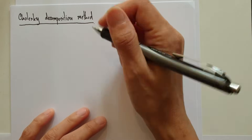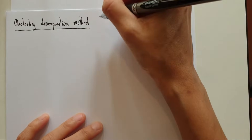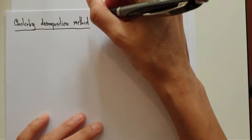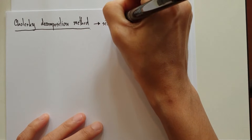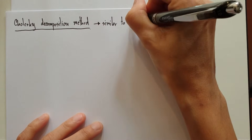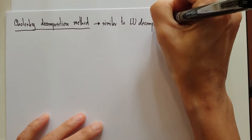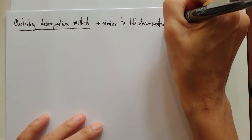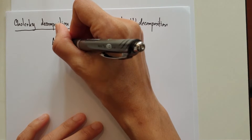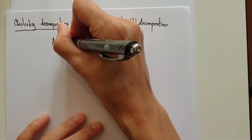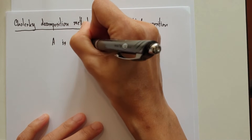Let's go with the Cholesky decomposition method, the next technique. This technique is similar to LU decomposition, but it's suitable for the case that A is a symmetric matrix.